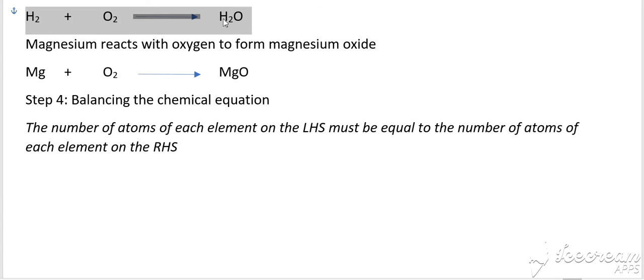we have two atoms of hydrogen but only one atom of oxygen. So, this is not balanced because on the left hand side, we have two atoms of oxygen but on the right hand side, we have only one atom of oxygen.